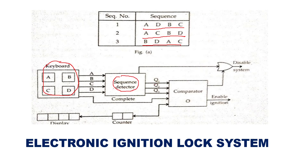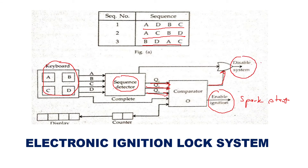The sequences are given to a comparator. The comparator decides whether the sequence entered is correct or not. If it is correct, it gives the enable ignition signal — the spark is produced and the vehicle starts. But if the drunk driver has not pressed the sequence correctly, the comparator sends a signal that disables the ignition system — it gets locked.